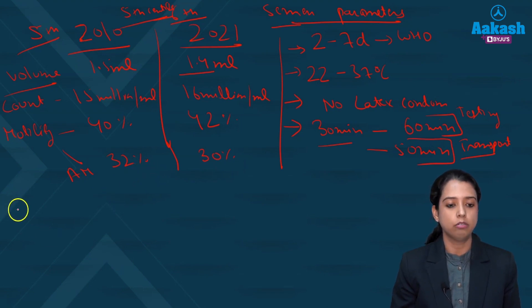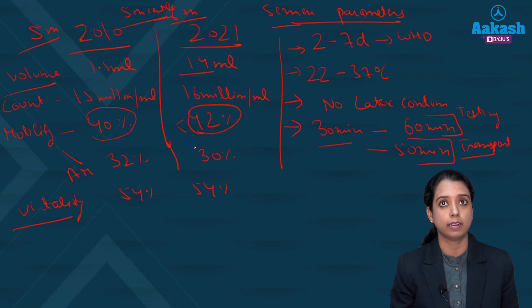There has been no change in the vitality. Vitality is still it has to be more than 54 percent. So test for vitality whether the sperms are dead or live are done. If this thing motility is less than 42 percent then you do the vitality test. Basically you don't do vitality test in all these semen samples because if more than 42 percent are motile you want to see whether those immotile sperms are dead or live.